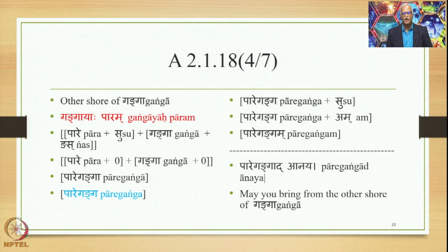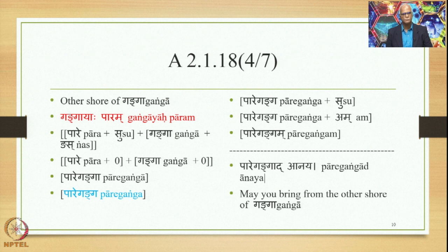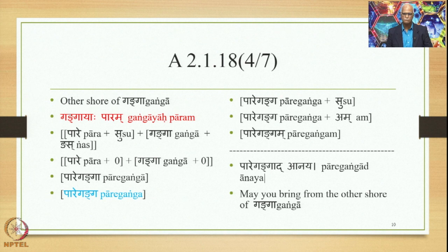Now when we use it in the sentence, we add the suffix su after it — Pare Ganga + su. Because Pare Ganga is an Avyayibhava Samasa, it becomes an Avyaya by the sutra Avyayibhavascha 1.1.41, and then we apply the sutra Avyayadapsupaha and su gets deleted. But there is an exception sutra which says that if an Avyayibhava Samasa ends in short a, then su is not deleted — rather, su gets substituted by am. So now we have Pare Ganga + am. Then we apply the sandhi rule and get the form Pare Gangam, which can be used in the sentence.